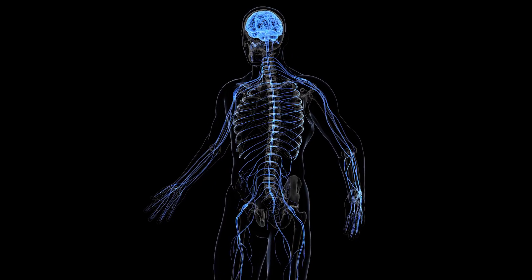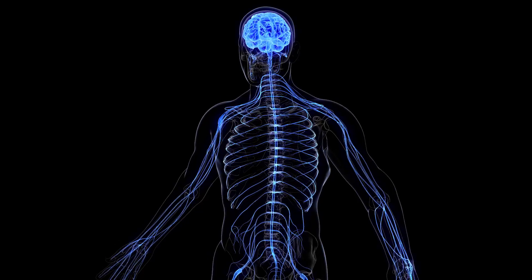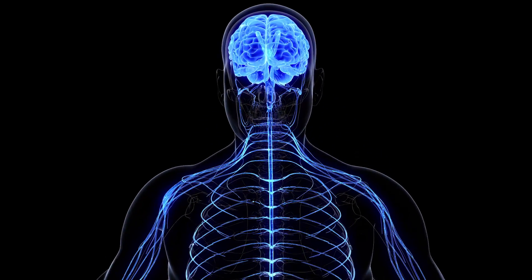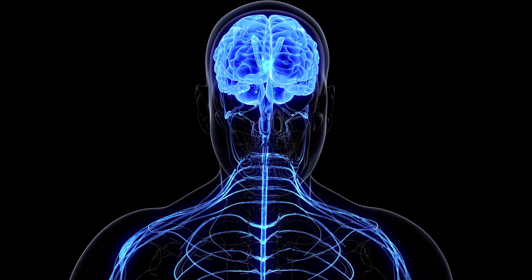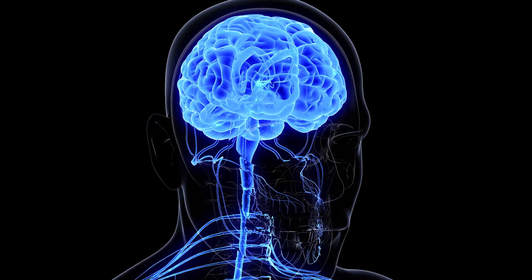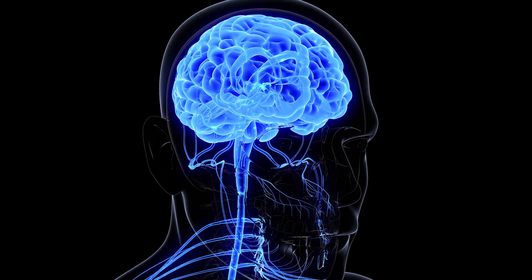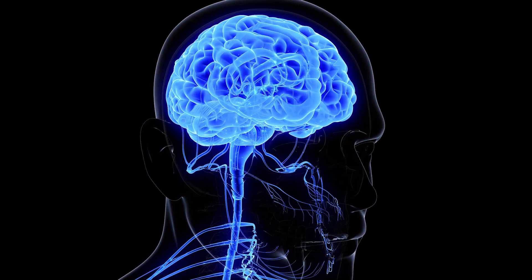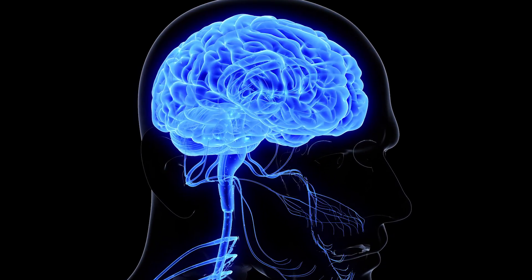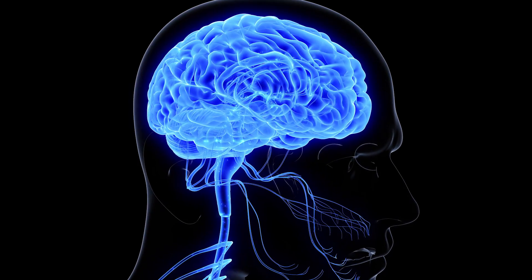The biological approach sees mental illness as a result of abnormalities that occur in an individual's nervous system or brain. This could be due to structural problems with different parts of the brain or nervous system, or chemical imbalances such as an imbalance in neurotransmitters or hormones.